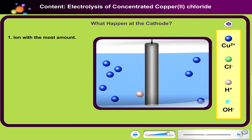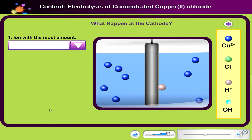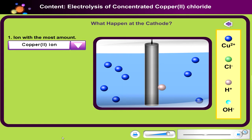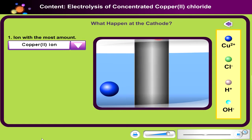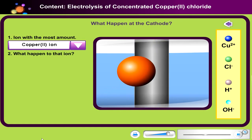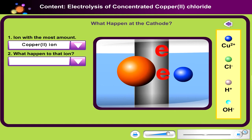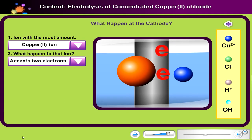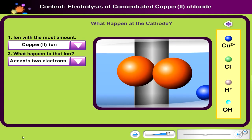Now, look closely. Can you name the ion with the most amounts? Click the drop-down menu to select your answer. There are more copper ions than hydrogen ions in the electrolyte. As the switch is closed, all cations move towards the cathode. Since copper ions are more than hydrogen ions, copper ions will be selectively discharged at the cathode. What happens to copper ions at the cathode? Click the drop-down menu to select your answer. Copper ions receive two electrons to form copper atom.